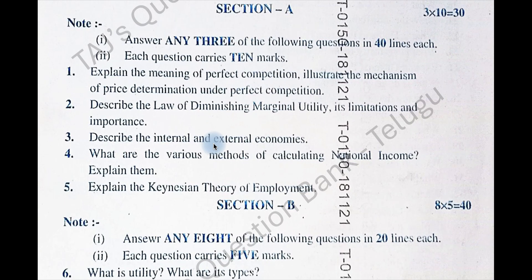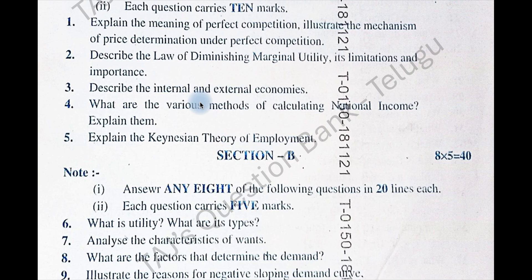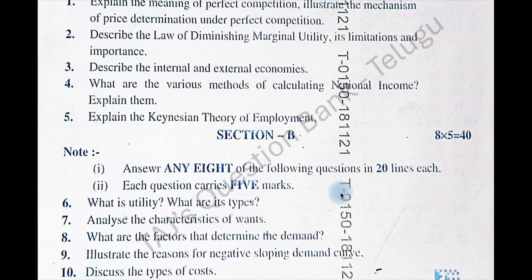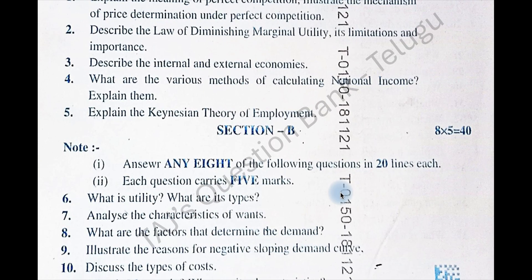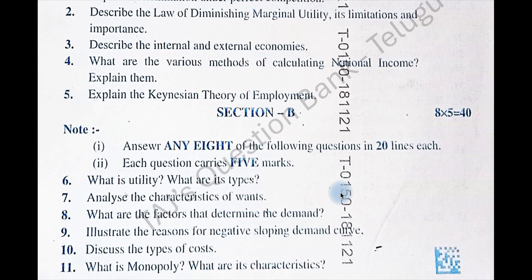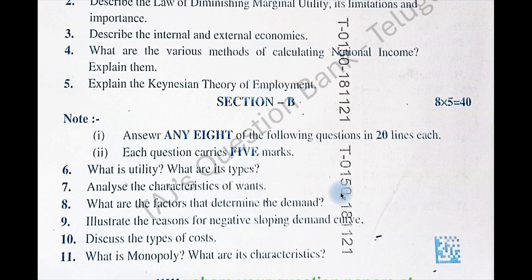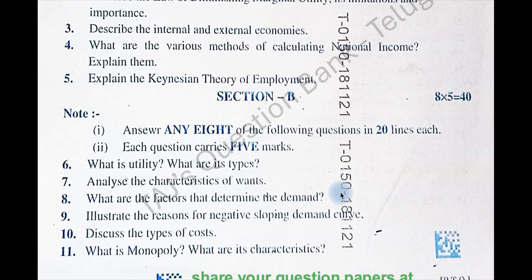So from our video, the first four questions have repeated in your question paper. There was also a seventh question that has repeated — describe the internal and external economies. All these questions came in your exam. You had to write only three, so if you had prepared even for the first five, you would have got 30 marks.